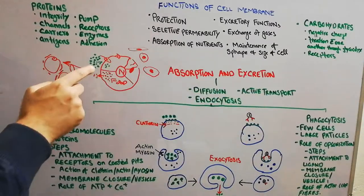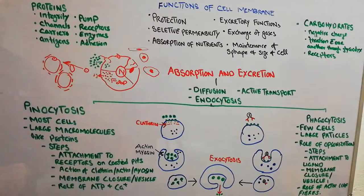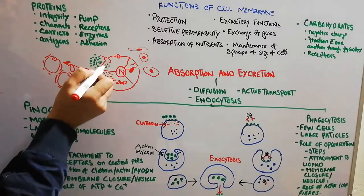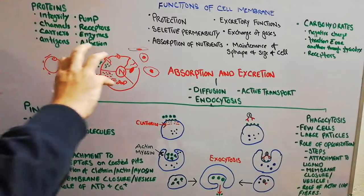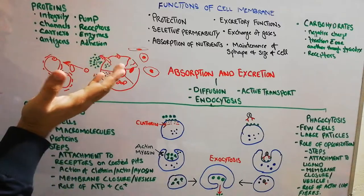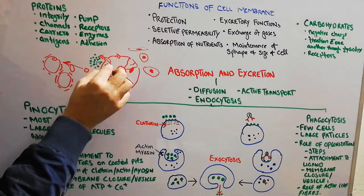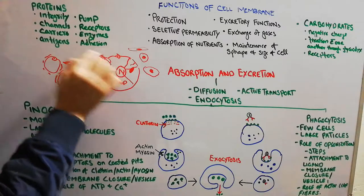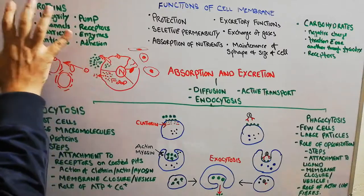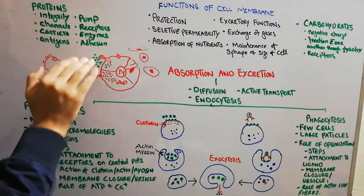Another method is active transport. Some sort of transporter in the form of a protein or carbohydrate will actively throw substances that are present inside or outside in lesser quantity — throwing them against the gradient. If the cell wants to get rid of a substance that is present in abundance, active transport is needed. This requires energy to move the nutrient out or in against the concentration gradient.